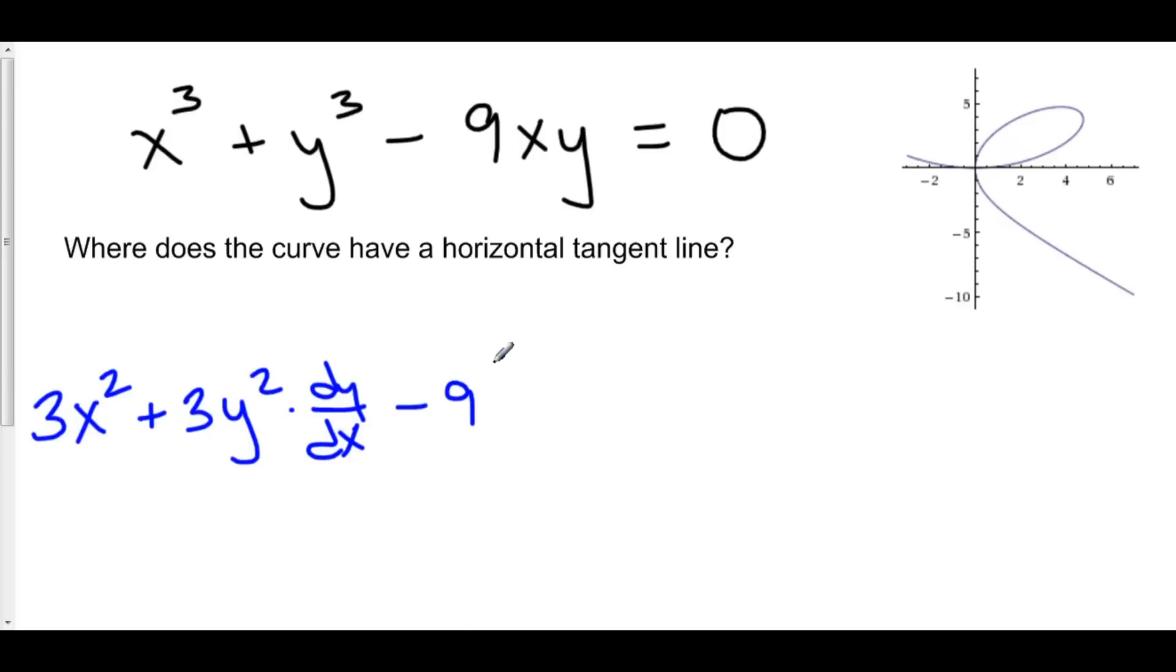Minus nine. I'm going to pull out that constant using constant rule. And now we have product rule between x and y. Because we have x times y. Product rule says we take the derivative of the first. The derivative of x is 1 times the second plus the first, x times the derivative of the second. And the derivative of y is equal to dy/dx. And this is all equal to the derivative of 0, which is just 0.